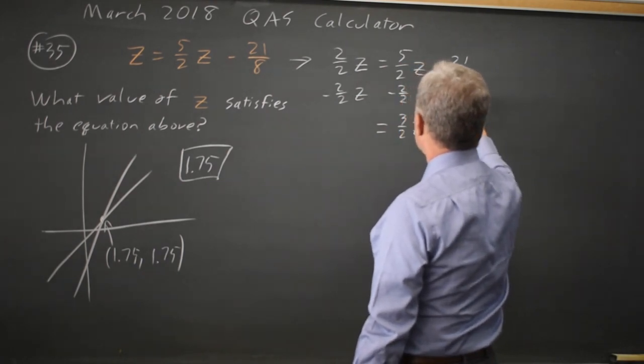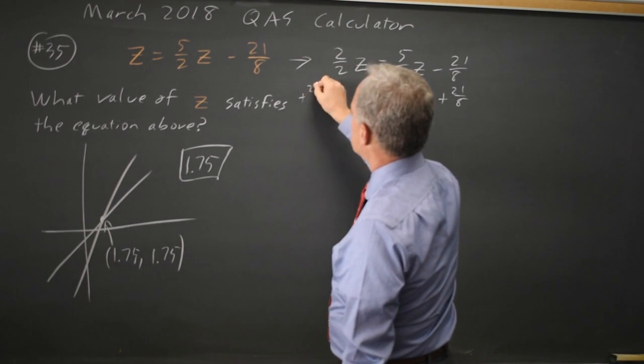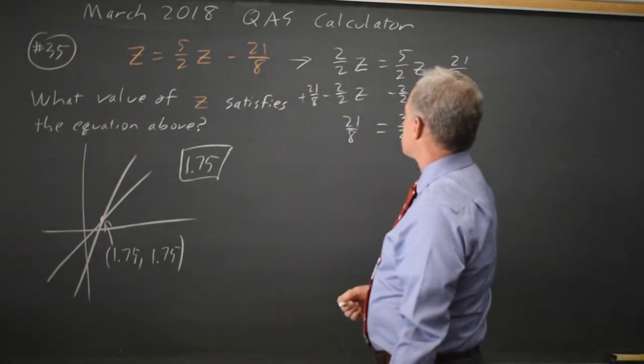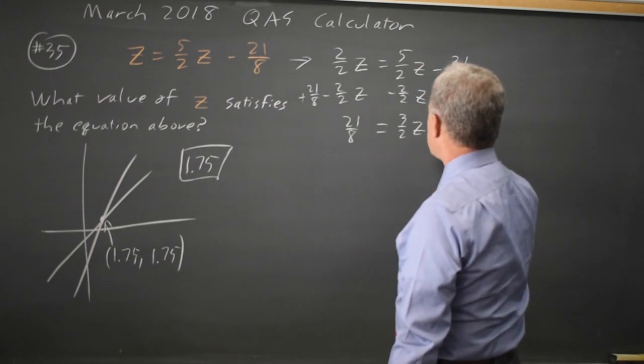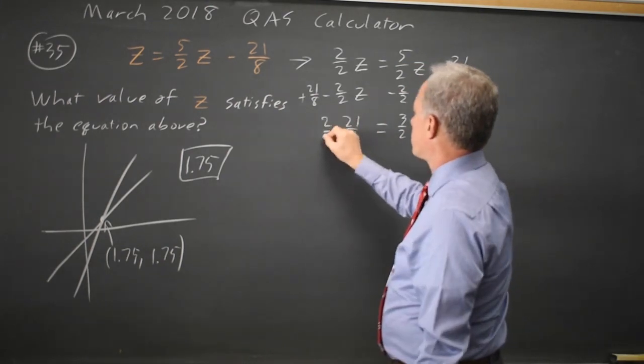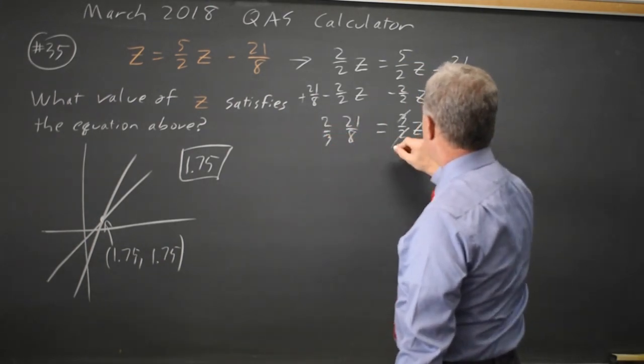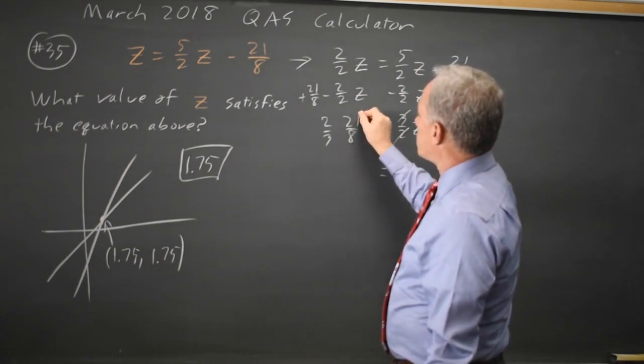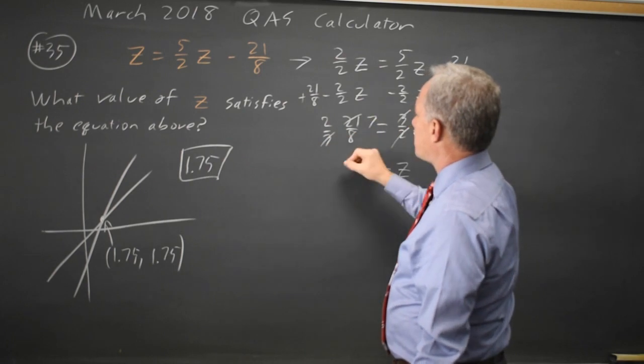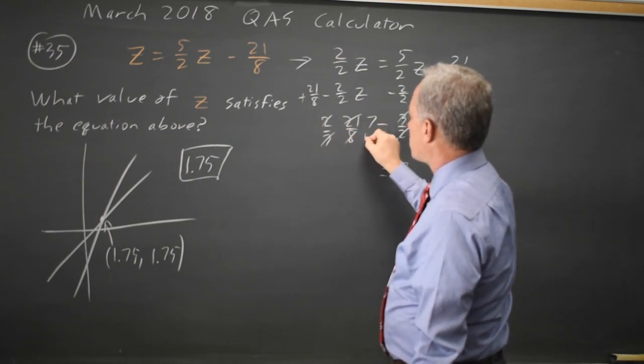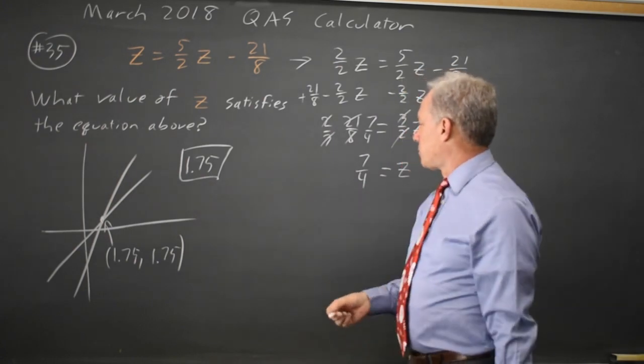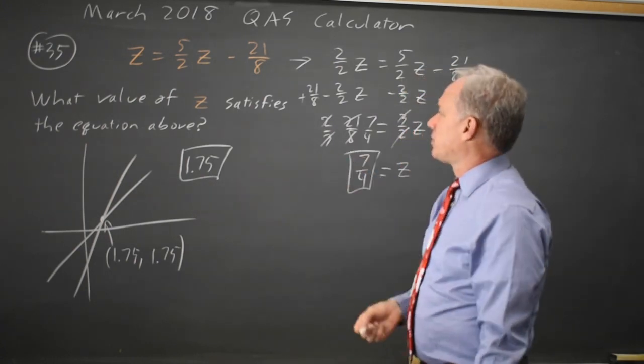If I subtract 2 halves z from 5 halves z I get 3 halves z. If I add 21 over 8 to both sides I get 21 over 8 equals 3 halves z. So that is just z by itself. 21 over 3 is 7 in the numerator, 2 times 8 is 4 in the denominator. 7 fourths, which we know is 1.75. So that's an equivalent answer.